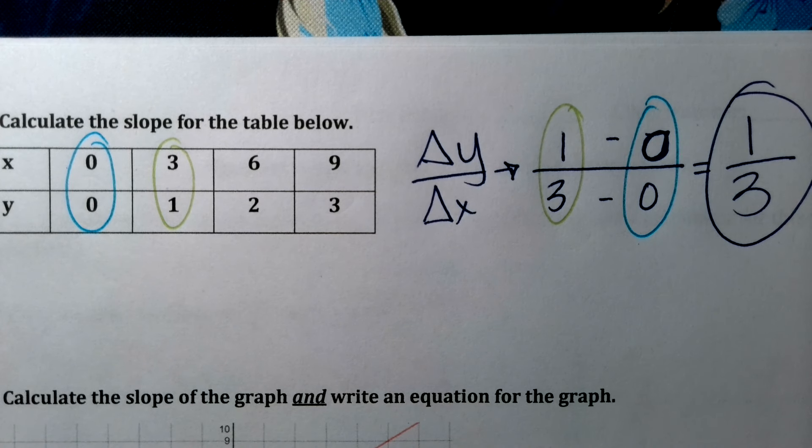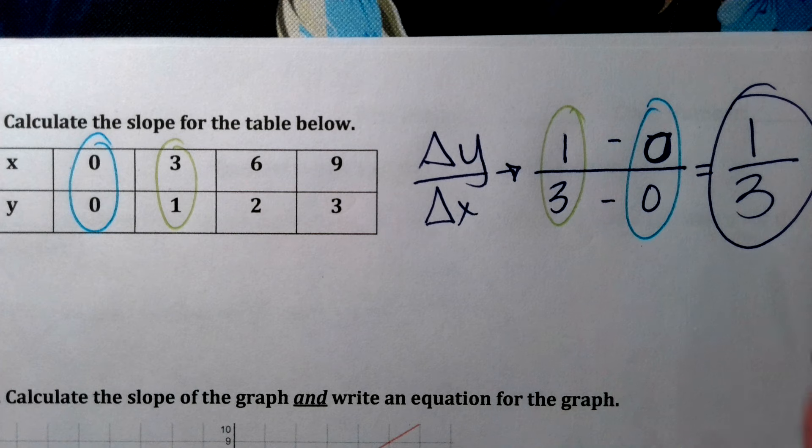It does not matter which set of points you pick. You will always be able to simplify to the same slope, 1 third.